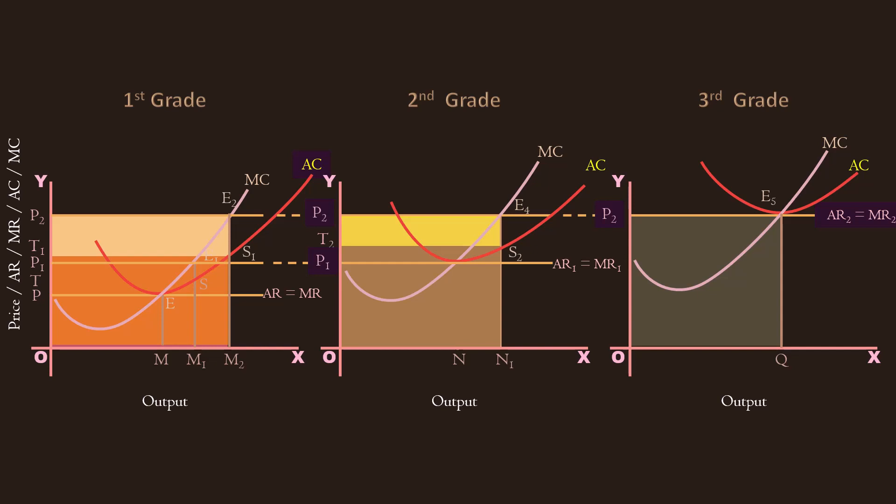Well, apply option C now. It says, surplus of product of all categories of land above the marginal land. Yes, third grade land is the marginal land. Surplus of product earned by first and second grade lands are rent. Hence, option C is correct.